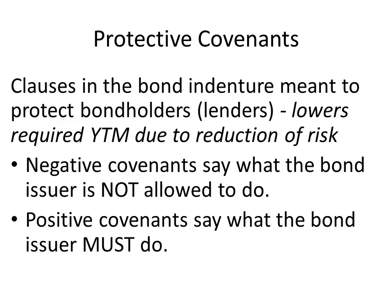If you own a home, you may already be familiar with protective covenants. For instance, in my neighborhood it's against the rules to leave your garage door up for more than an hour at a time, and I'm also prohibited from having a pink flamingo in my front yard. These are rules people agree to abide by when they enter into an agreement. The same is true with the bond indenture — it will have clauses meant to protect the bondholders. Negative covenants say what the bond issuer is not allowed to do, and positive covenants say what the bond issuer must do.